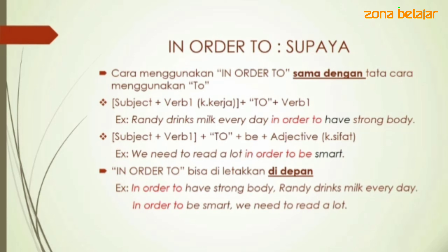Contoh yang kedua: subjek, verb one, 'in order to be', karena kemudian diikuti adjektif. Contoh: we need to read a lot in order to be smart. Perbedaannya, 'in order to' bisa diletakkan di depan — tidak seperti 'to' yang harus ada di tengah. Contoh: In order to have strong body, Randy drinks milk every day. In order to be smart, we need to read a lot — supaya jadi pintar, kita butuh banyak membaca.